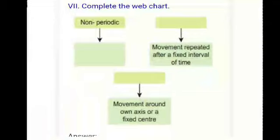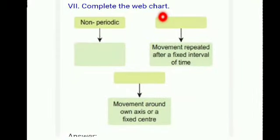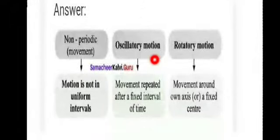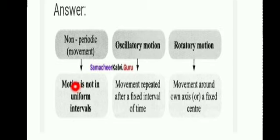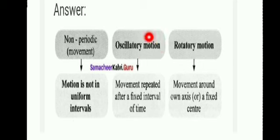Complete the concept chart. Non-periodic motion: motion not repeated in uniform intervals. Periodic motion: movement repeated after a fixed interval of time, answer oscillatory motion. Movement around the object's own axis at a fixed center, answer rotatory motion.